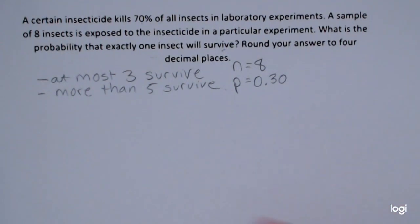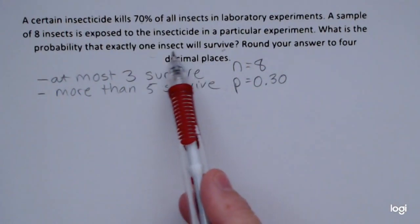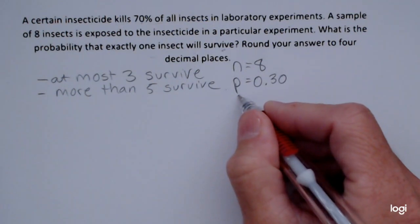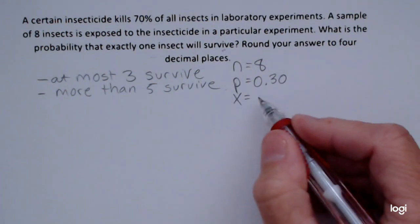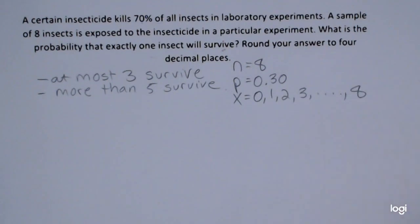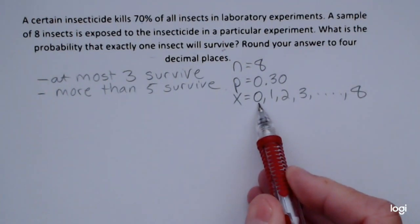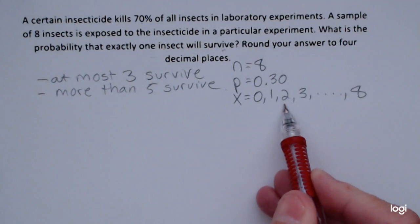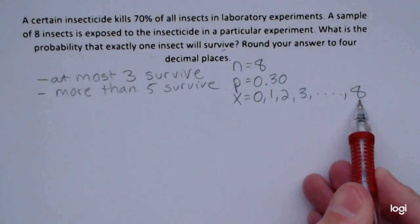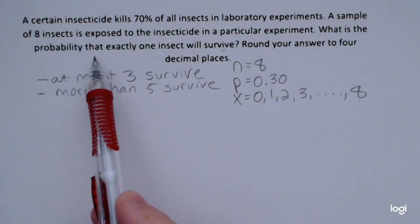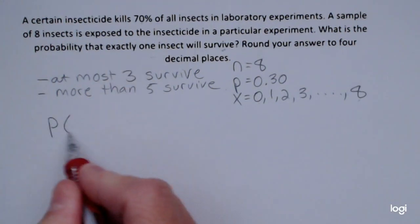Most of the time homework problems are more straightforward than this — I picked this one because it had this little extra bit of sneakiness. I also want to recognize that x is going to take on values 0 up through 8, where 0 is that no insects survive, 1 is exactly 1 insect survives, 2 survive, up to all 8 surviving. So to answer the first part, I want to find the probability that x is exactly 1 — one surviving.